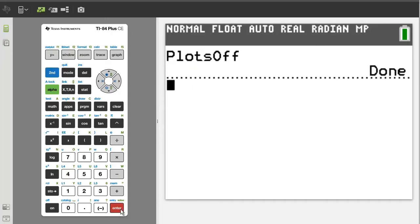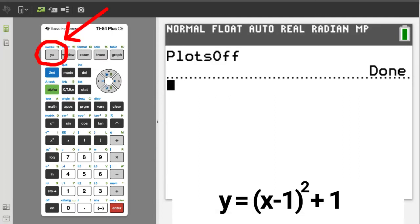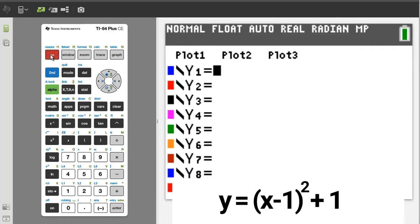Now press the enter button. It says done, which means the stat plots are off. Ok. To graph this parabola, press the y equals button. Enter the equation on y1.